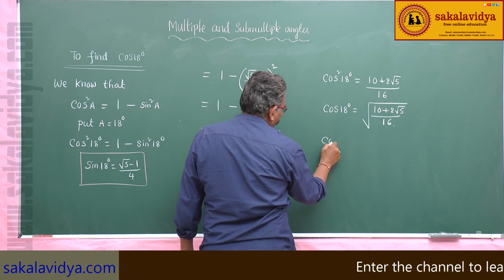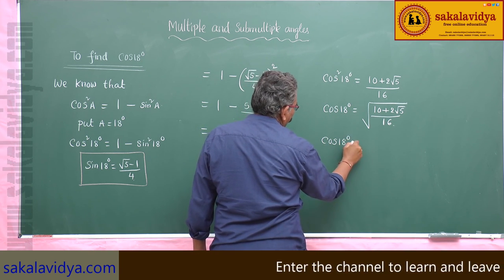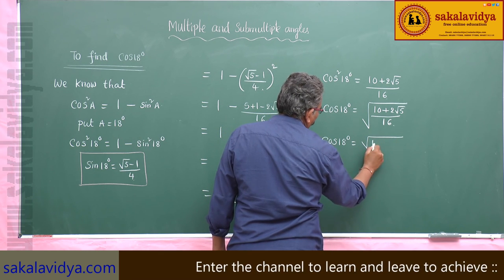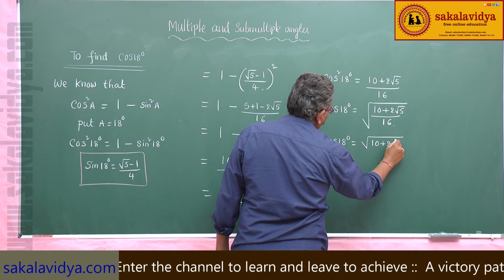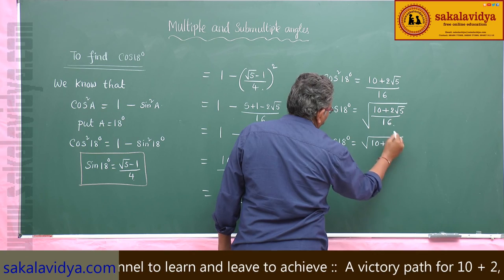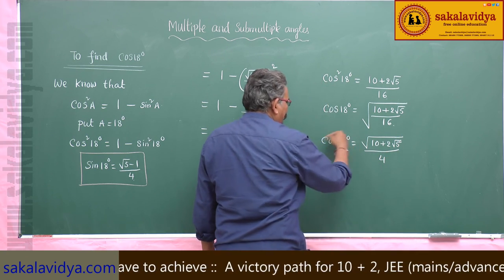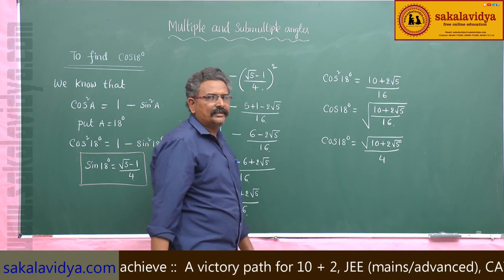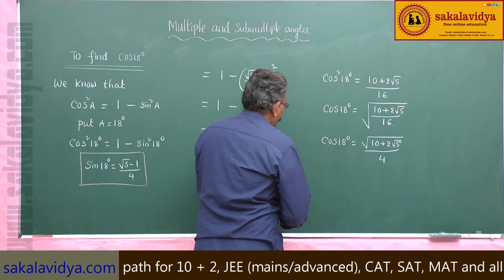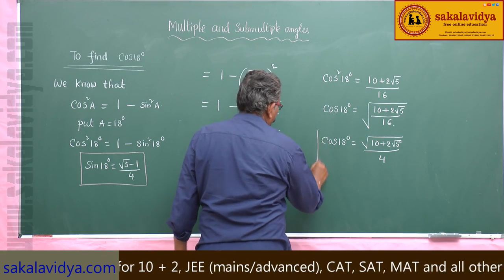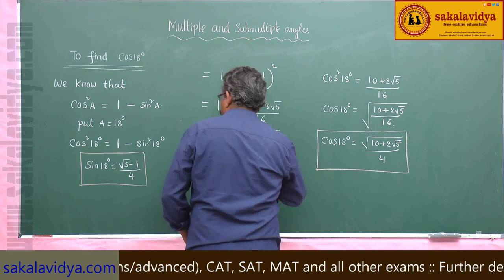So cos 18 degrees is equal to the square root of (10 plus 2√5) divided by 4, since the square root of 16 is 4. Since 18 degrees lies in the first quadrant, it is positive only. So this is cos 18 degrees.